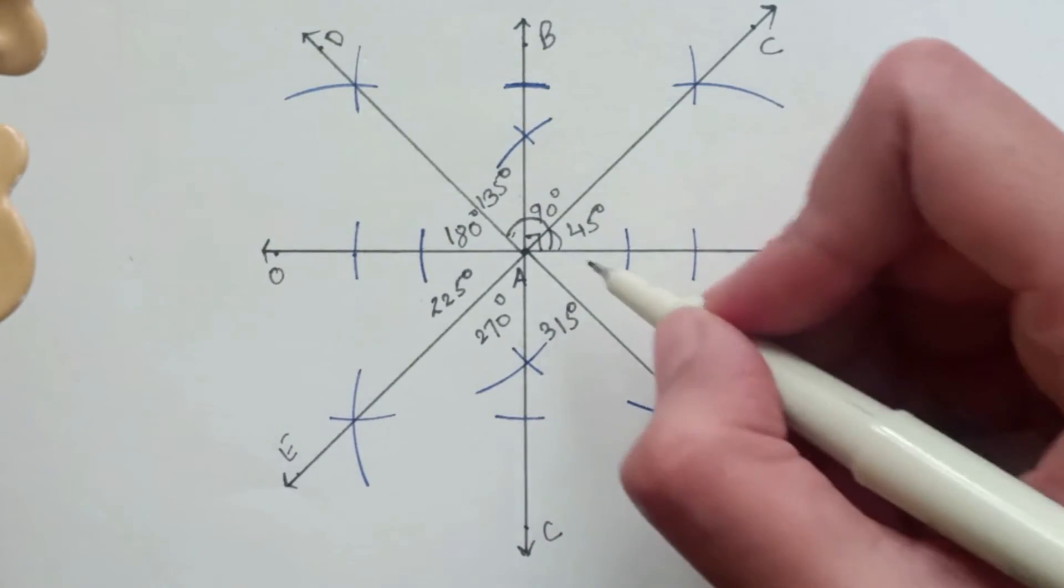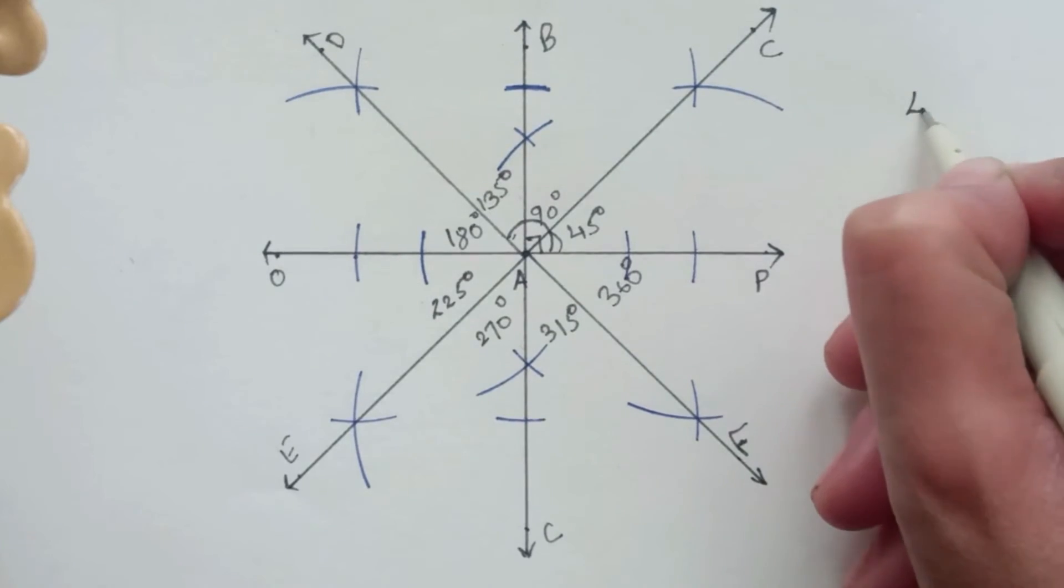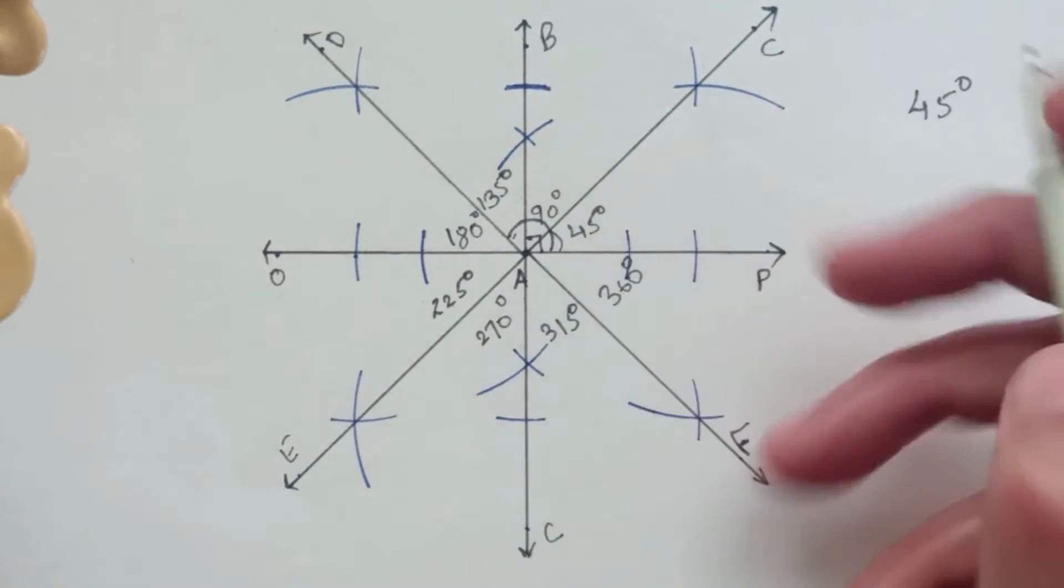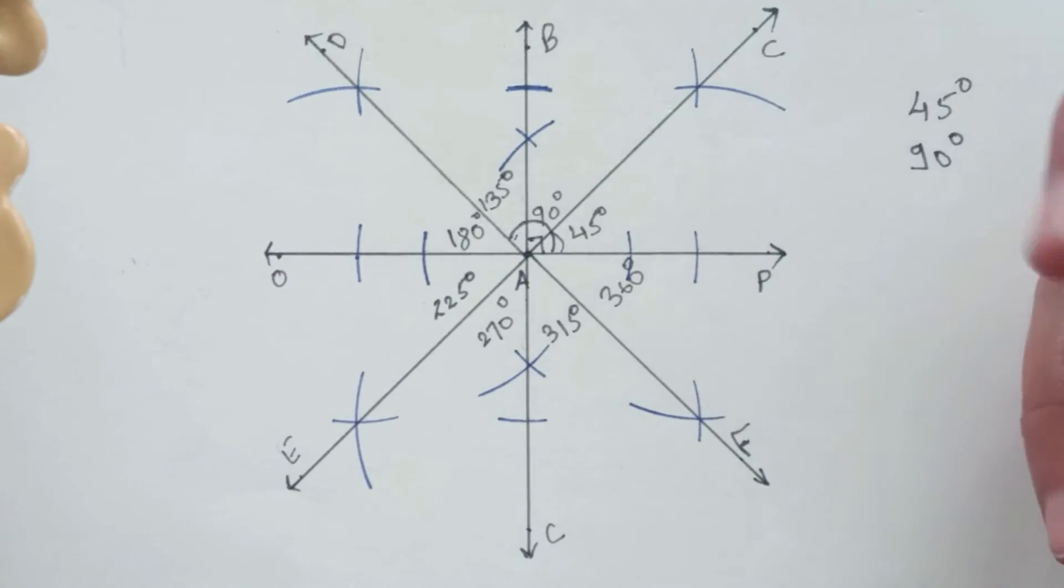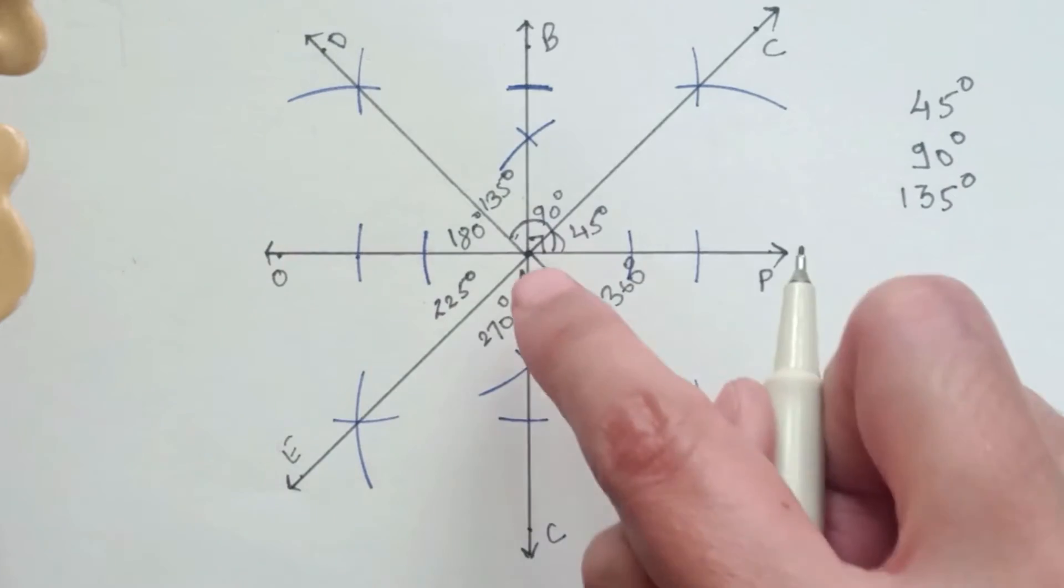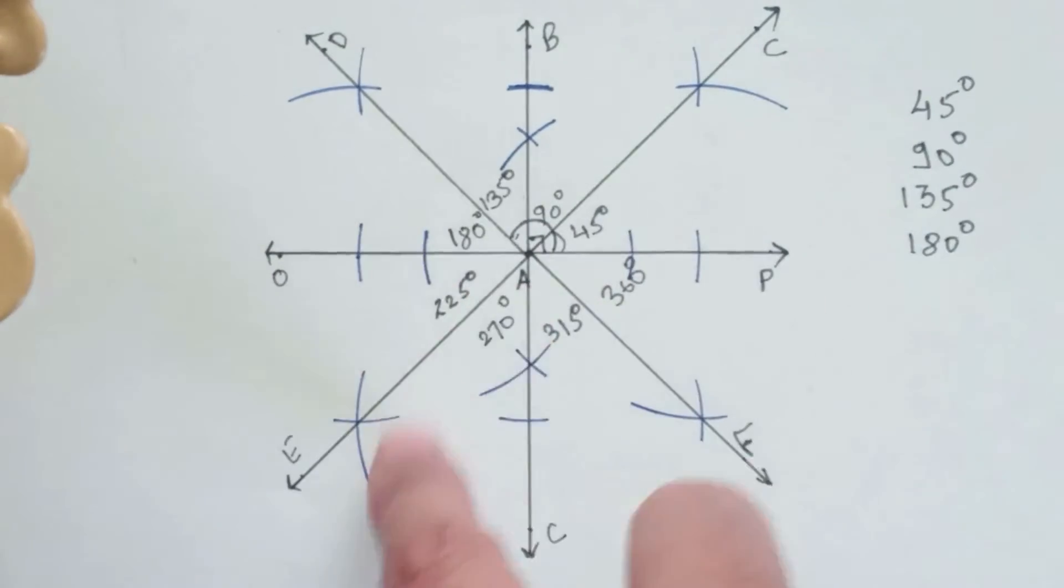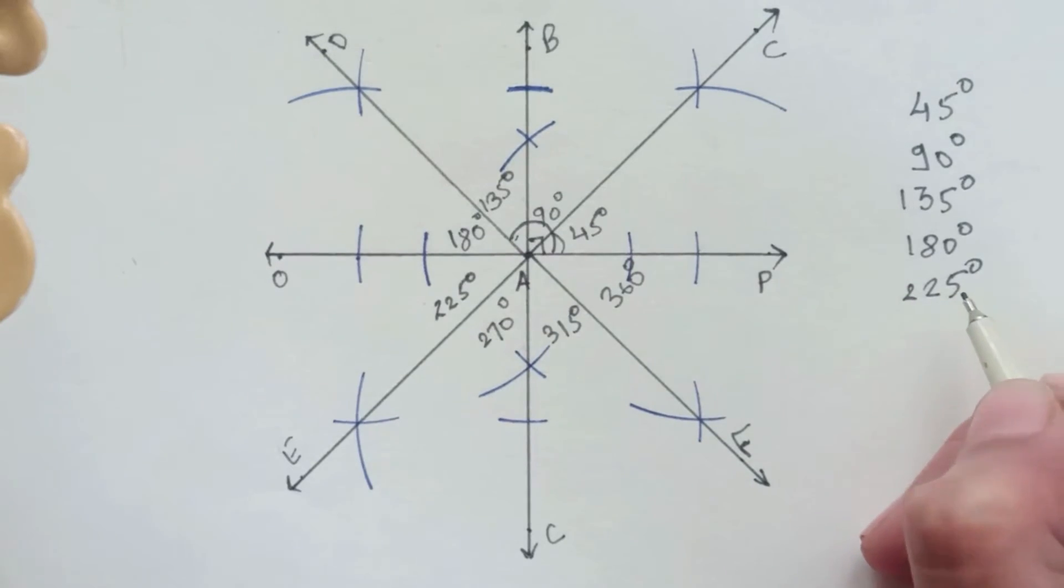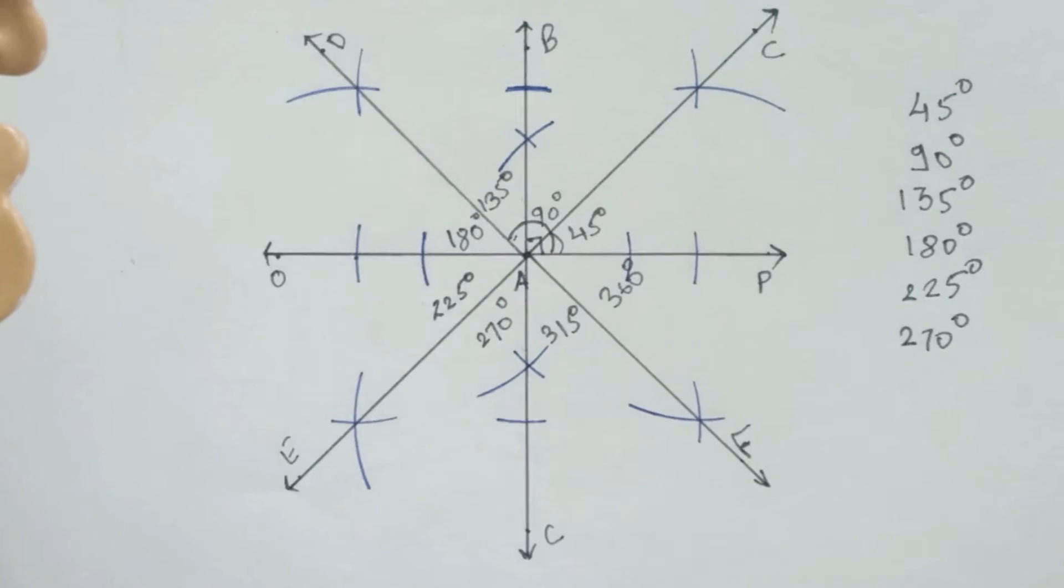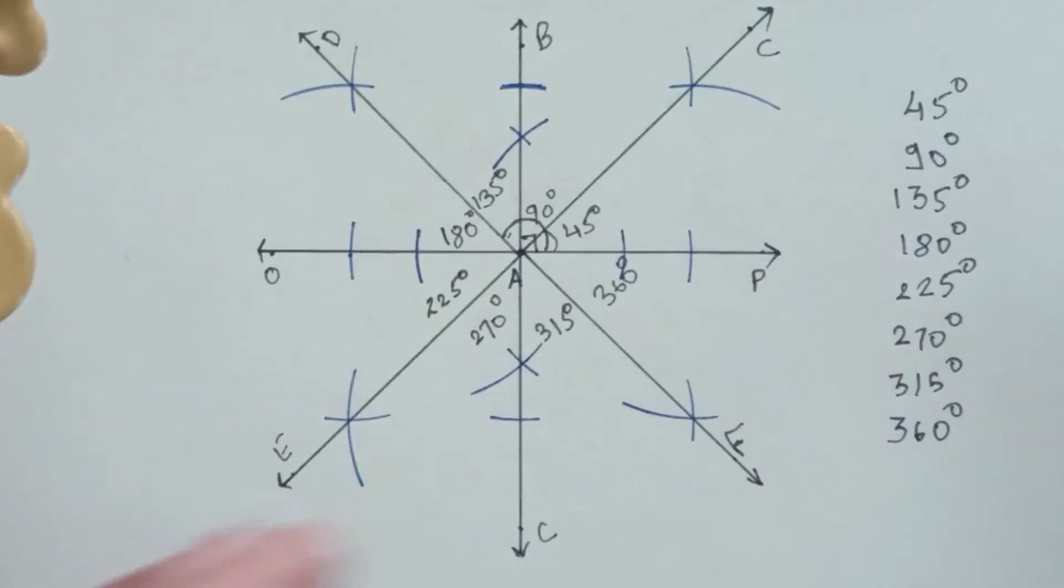And then finally this will complete our 360 degrees of angle. So in this way we get first a 45 degrees angle, then 90 degrees angle, then 135 degree angle from AP, then 180 degree angle, then 225 degree angle, then 270 degree angle, then 315 degree angle of AF, and then finally we completed our 360 degree angle. So all these angles are at a 45 degrees distance from each other.